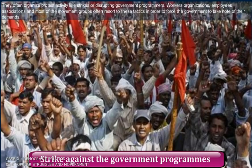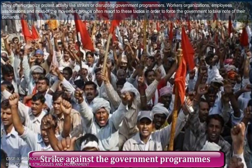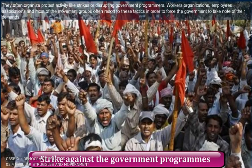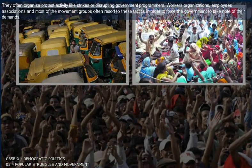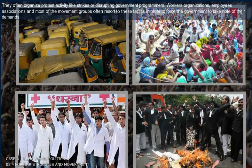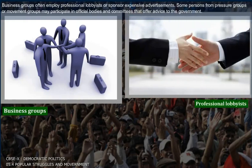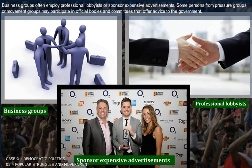They often organize protest activities like strikes or disrupting government programs. Workers' organizations, employees' associations, and most movement groups often resort to these tactics in order to force the government to take note of their demands. Business groups often employ professional lobbyists or sponsor expensive advertisements. Some persons from pressure groups or movement groups may participate in official bodies and committees and offer advice to the government.